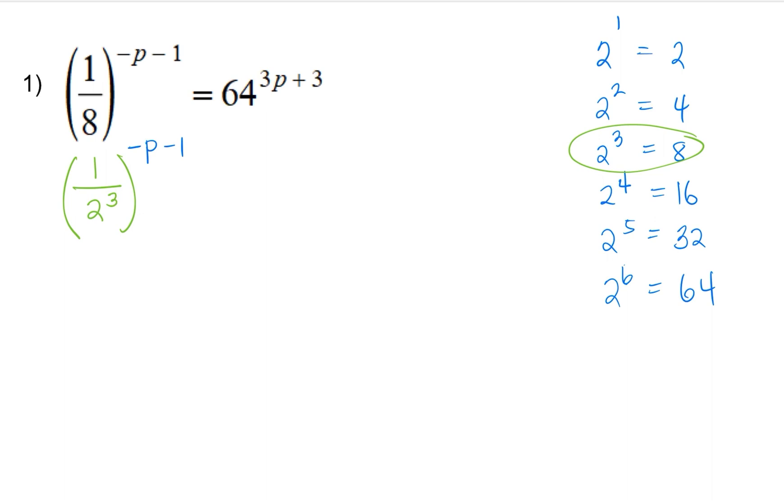We'll also make the other side, the right side, as base of 2. And that base of 2, which is equal to 2 to the power 6. So 2 to the power 6 times the original exponent 3p plus 3.